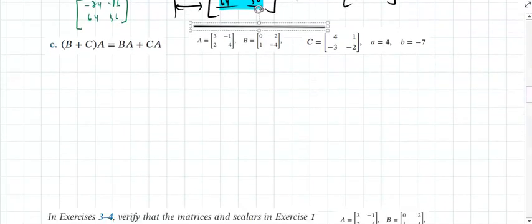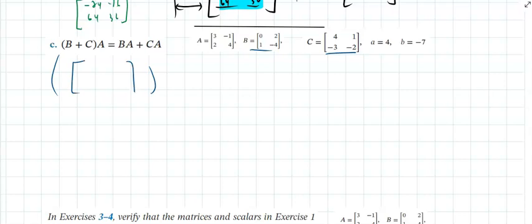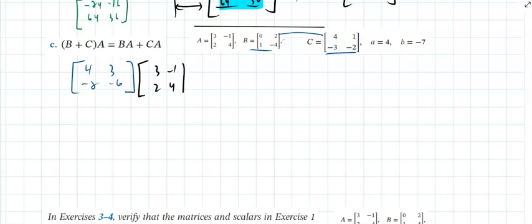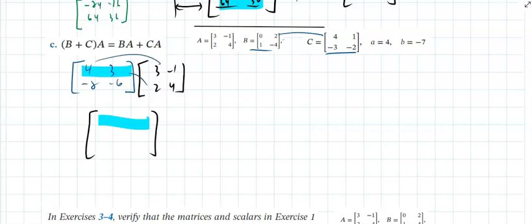Now verify the distributive property (B+C)A = BA + CA. First compute B+C = [4, 3; 1, −6] then multiply by A = [3, −1; 2, 4]. The result is [12+6, −4+12; −6−12, 3+2−24] = [18, 8; −18, −12].